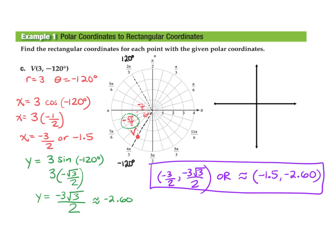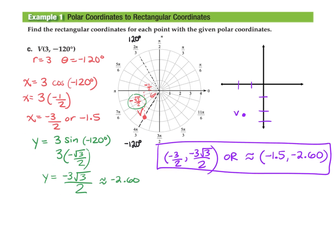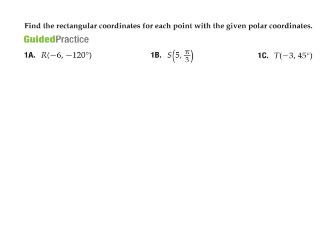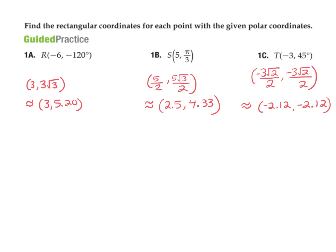Sketching that — this part is totally optional, but it's great to make sure your answer makes sense. Plotting (-1.5, -2.6) looks comparable to the point graphed on the polar grid. This concludes example one. There are guided practice problems — I'll post the answers, and if you want to try them on your own, you can see if you get the same solutions.